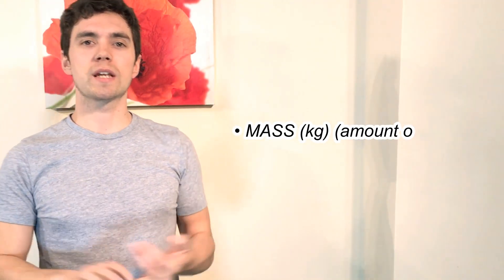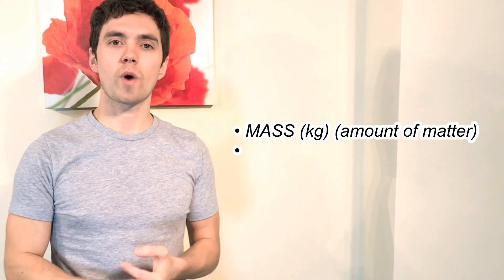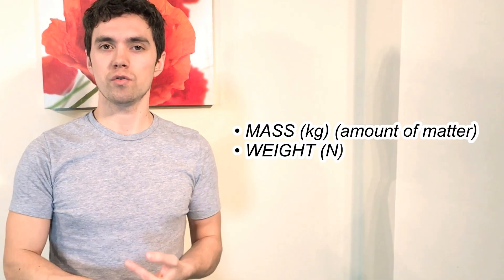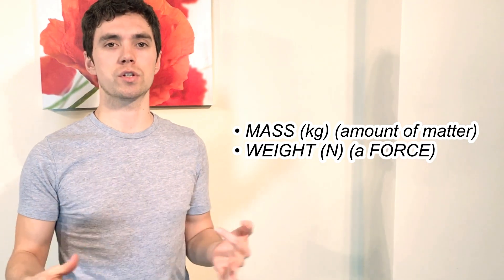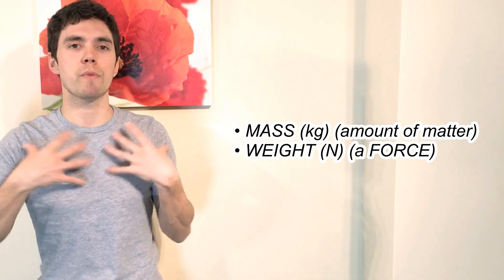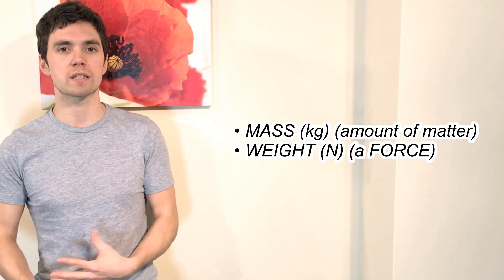Mass is measured in kilograms. Weight is measured in Newtons — weight is a force, hence it's measured in Newtons. Mass is how much of an object there is. The mass of an object stays the same everywhere all over the universe — it doesn't change. Whereas the weight of an object is going to vary significantly depending on where you are.